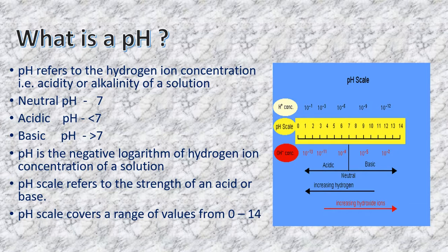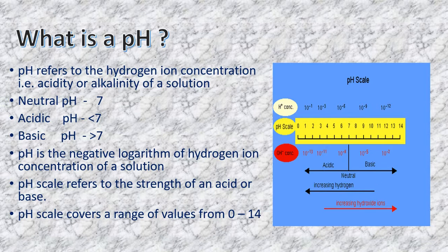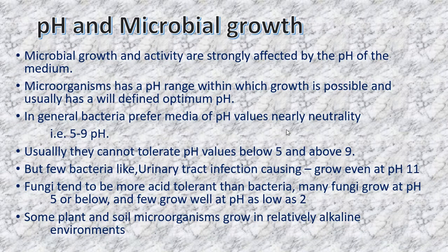The acidity or alkalinity of an environment can greatly affect microbial growth, which is why we study the pH concept. Every microorganism has a pH range within which growth is possible, and typically shows a well-defined optimum growth pH. Most organisms show a growth range of about pH 5 to 8. Exceptions include acidophiles, which grow at lower pH, and basophiles or alkalophiles, which grow above pH 7.